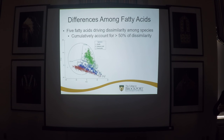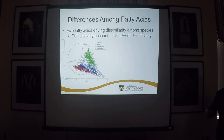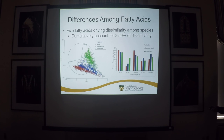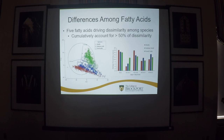Next we looked at the fatty acids responsible for those differences. This is a principal component analysis showing which fatty acids are driving those differences. Using five fatty acids shown on the axes, we were able to identify 50 percent of that dissimilarity among the species. Fatty acids like 16:1n-7 are more abundant in benthic fish like the goby, while fatty acids like 18:1n-9 are more abundant in alewife and rainbow smelt.